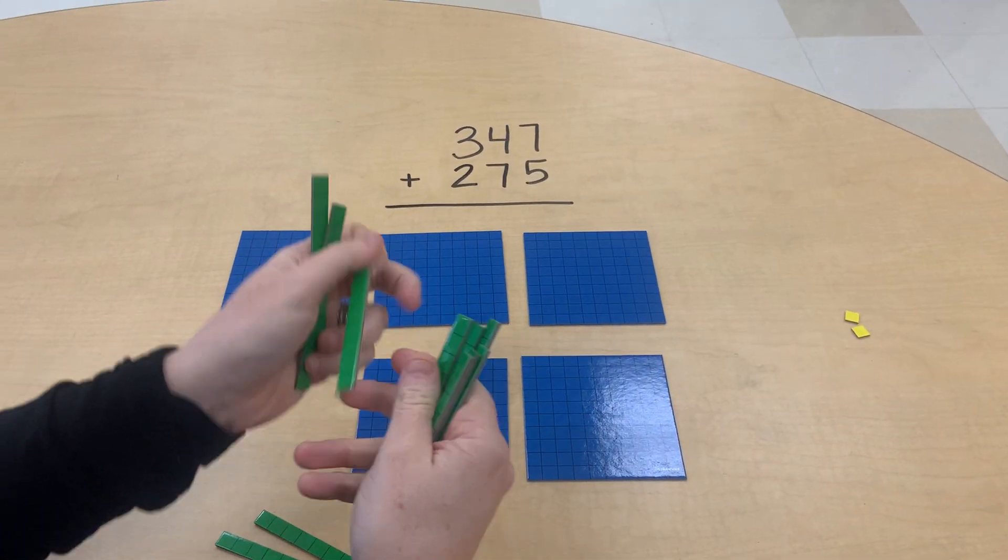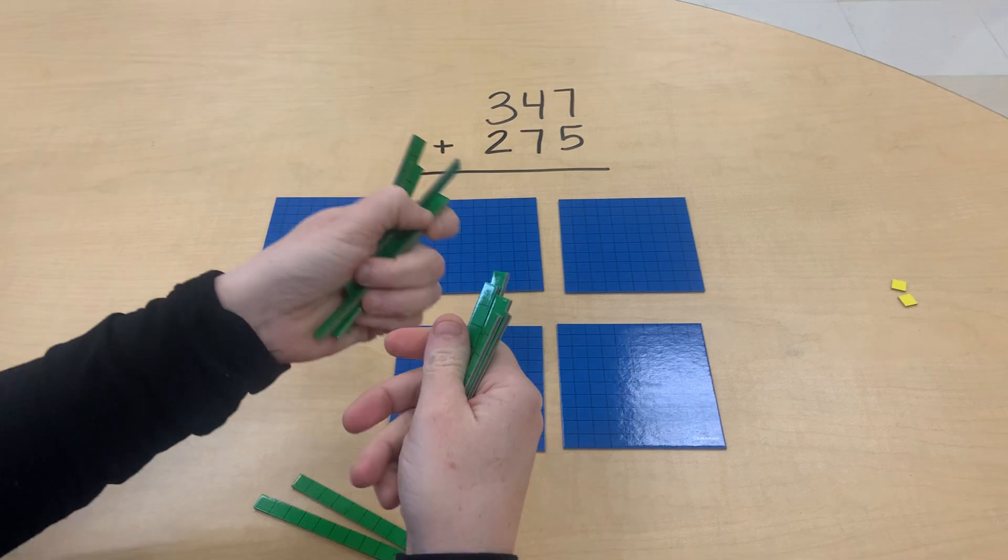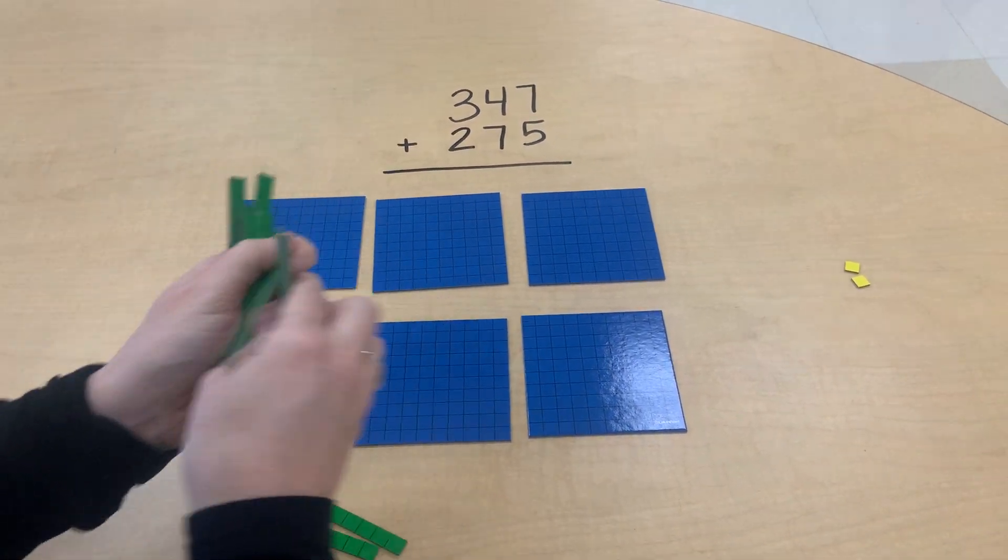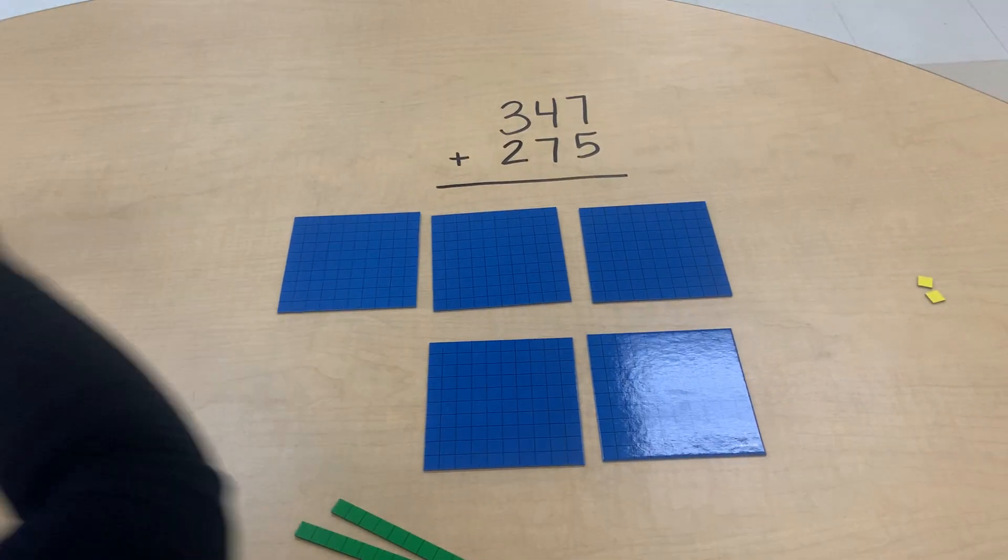One, two, three, four, five, six, seven, eight, nine, ten for a one hundred.